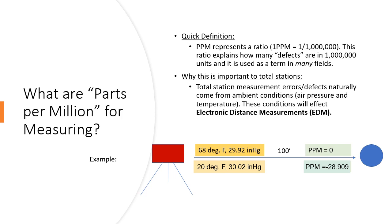And this is a simple formula to calculate parts per million error. All you have to do is take the distance that you're measuring, divide it by 1 million, and multiply it by the parts per million. 100 feet divided by 1 million times negative 28.909.